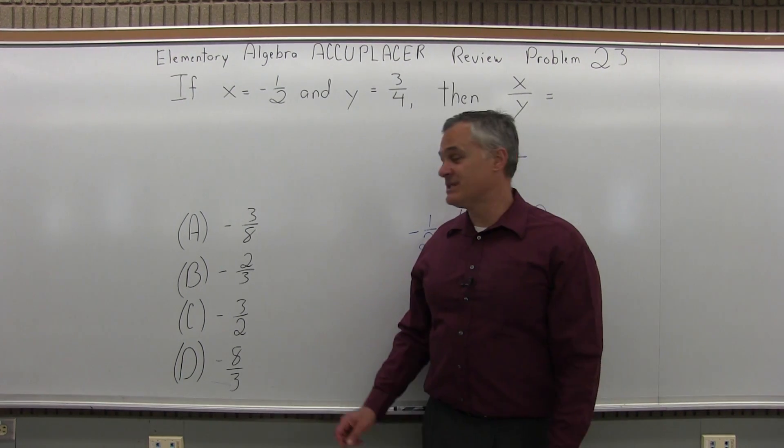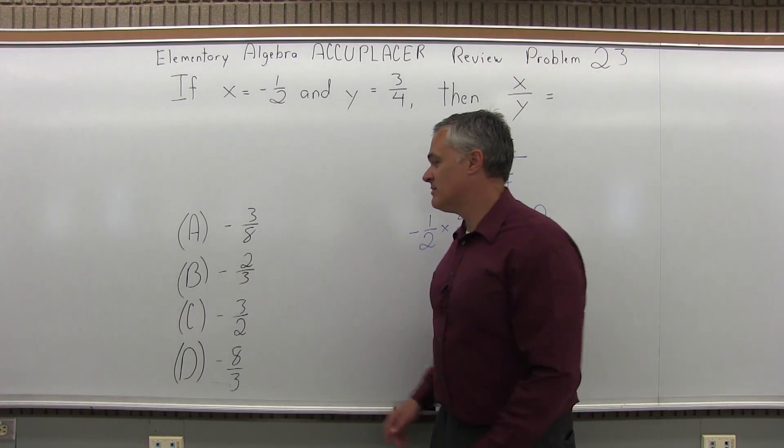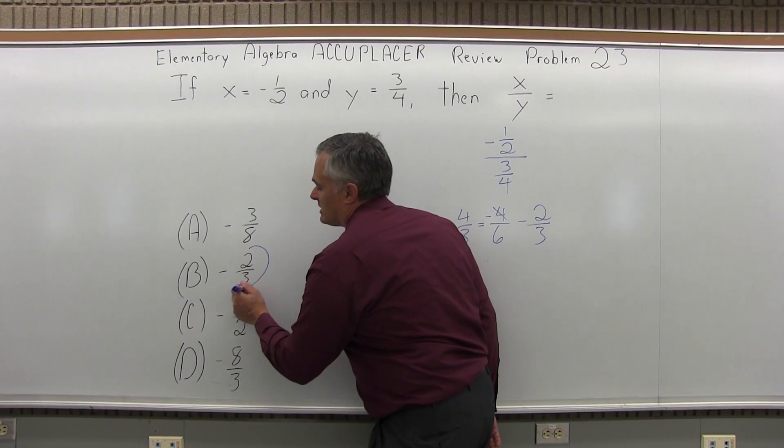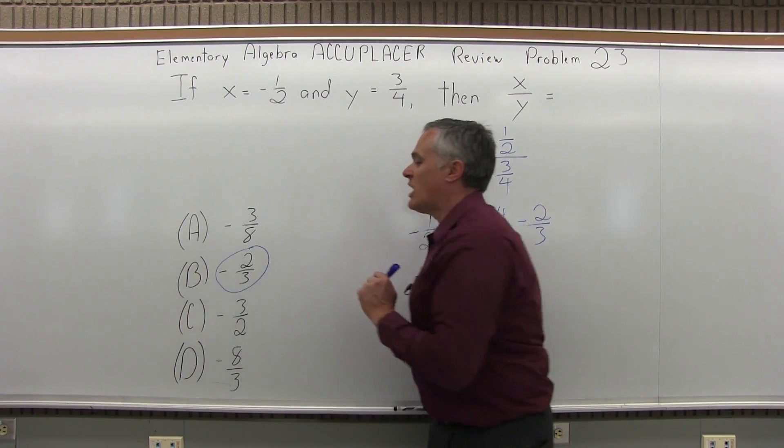is that one of my options, and now it is. It's option B. So the answer for 23 is option B, negative two-thirds.